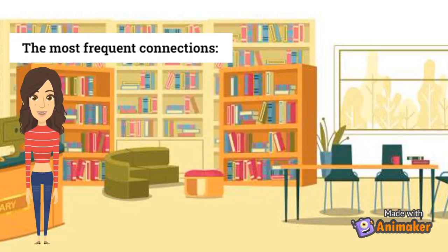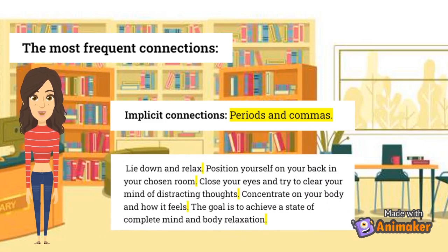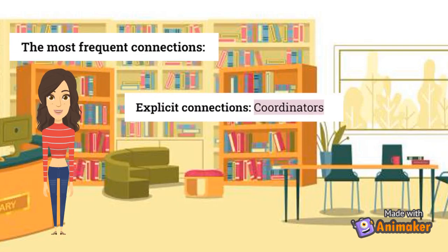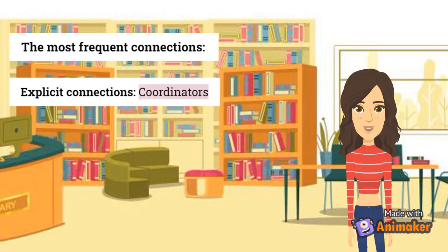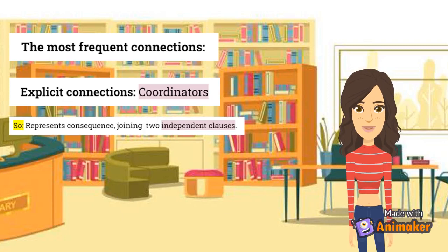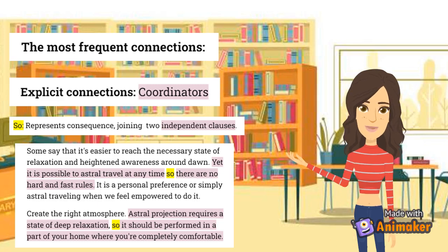Regarding the most frequent connections between sentences, we can say that implicit ones are the most common, specifically periods. For example, just in this paragraph we have found five periods. For explicit connections, we found coordinators of addition, such as AND, which joins two independent clauses: "Close your eyes and try to clear your mind of distracting thoughts." Another coordinating conjunction that can be found is SO, which represents consequence, joining two independent clauses: "It is possible to astral travel at any time, so there are no hard and fast rules." And: "Astral projection requires a state of deep relaxation, so it should be performed in a part of your home where you are completely comfortable."